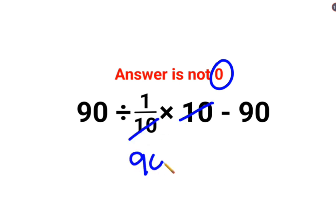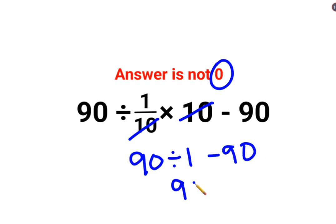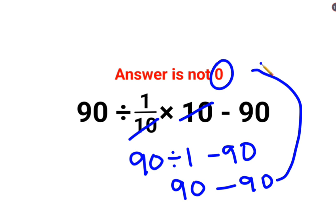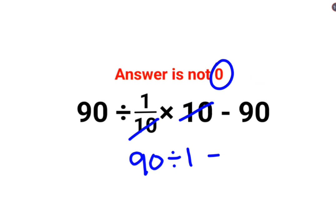So we have just 90 divided by 1, minus 90. Any number when divided by 1, you get the answer as the number itself. So you are getting 90 minus 90, and technically the answer should have been 0. But that is not the right way of solving these kinds of sums.